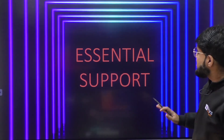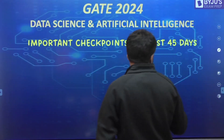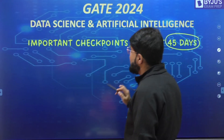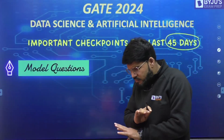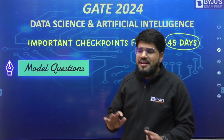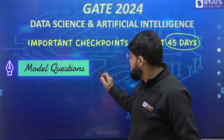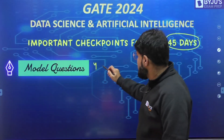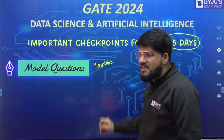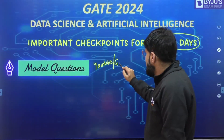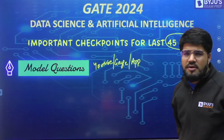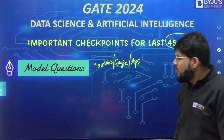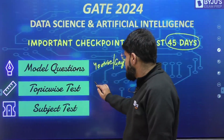In the last 45 days, here are the essential checkpoints. Number one: since this is a newly added paper, well-drafted books are not yet available in the market. You can get model questions from YouTube, Google, and the BYJU's Exam Prep app. These model questions will help you prepare for the Data Science and AI paper. Topic-wise tests and subject tests are a must — they give you question variety and performance tracking.